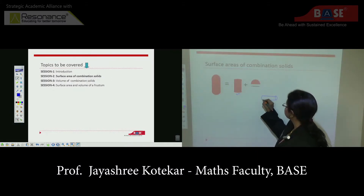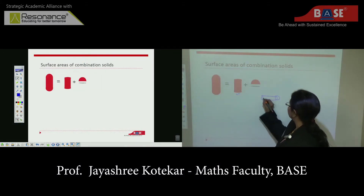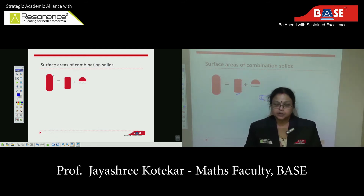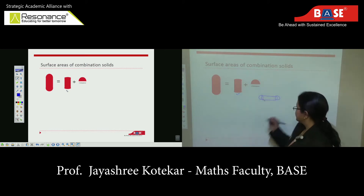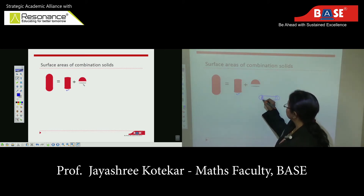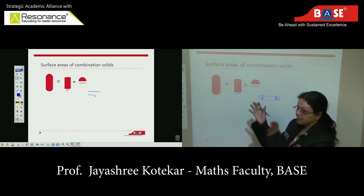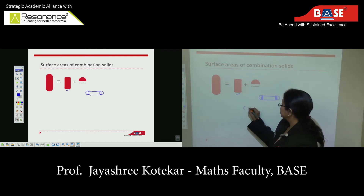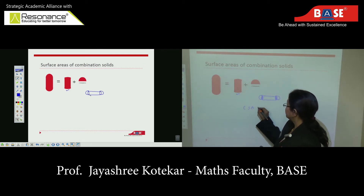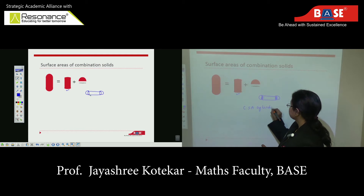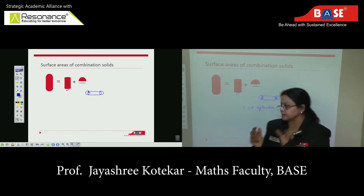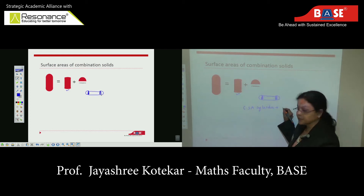A cylinder like that, and a hemisphere on both sides — this forms a capsule. Whenever you are asked for the surface area of this, you can very clearly see that these two surfaces are actually merged with that of the cylinder. So basically, you will have the CSA, or curved surface area, of the cylinder, plus the two hemispheres joined together to form a sphere.